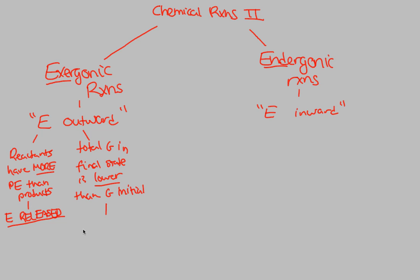What that means — the end-all outcome — is that delta G is always equal to a negative number in exergonic reactions. This is because reactants have more potential energy than products, G final is lower than G initial, and so the system undergoes a loss of energy. That energy will be released outward toward the environment.